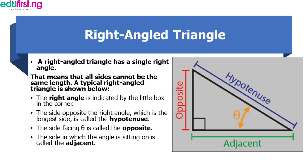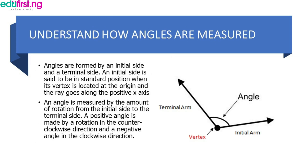We need to understand how angles are measured. We can see the terminal arm, the initial arm, and the angle in this diagram. Angles are formed by an initial side and a terminal side, and are measured by the amount of rotation from the initial side to the terminal side.